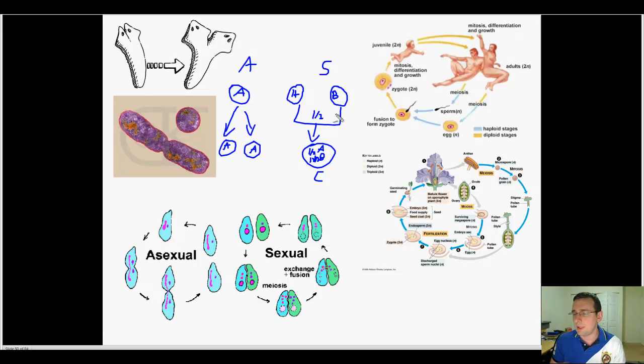Number of offspring, asexual two, sexual one. Now remember, of course, you can have that happen many times, so you can make several children through sexual reproduction, but each event will typically generate one zygote or one copy of a new entity.